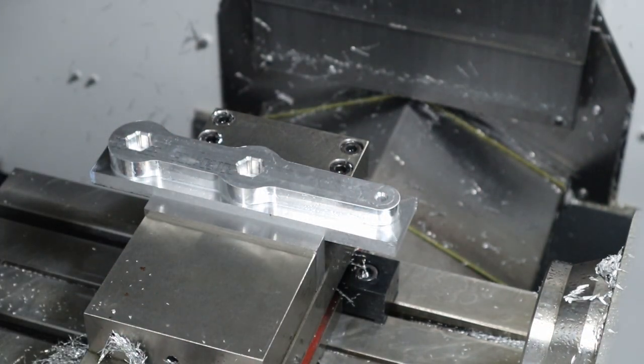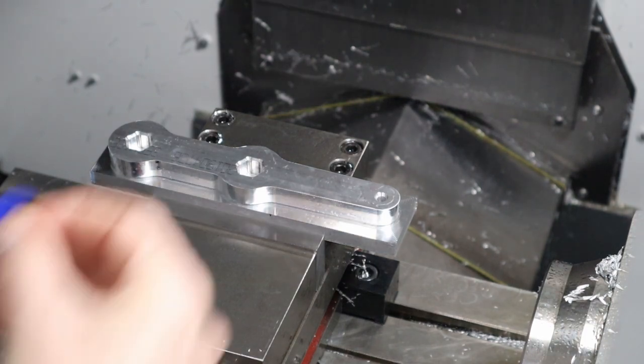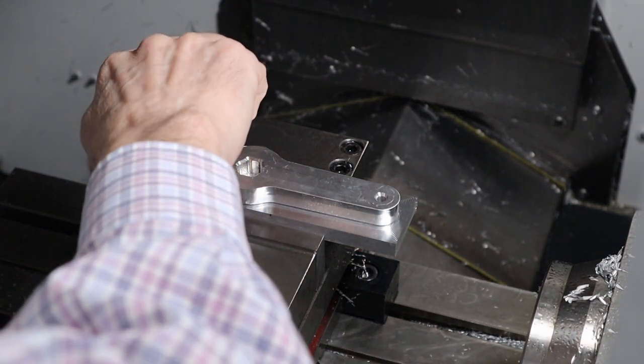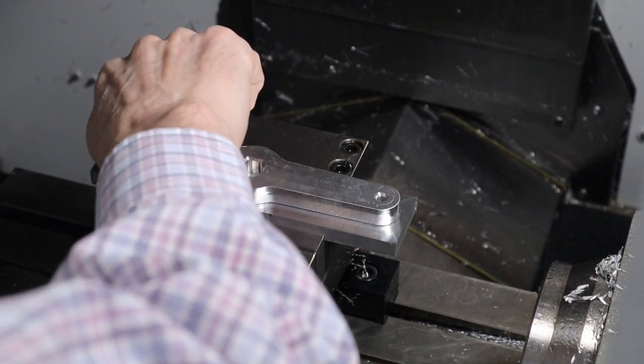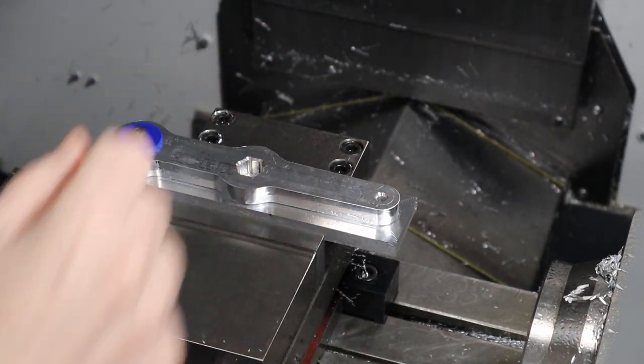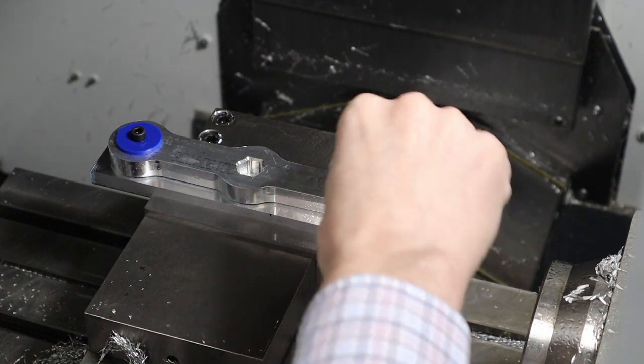And then I can chamfer the middle, well actually they're all chamfered, so I just need to chamfer on the outside edge, and then the part will be done. And I can pull it out, tap the 1.25 hole on the right side, and then put the handle in.